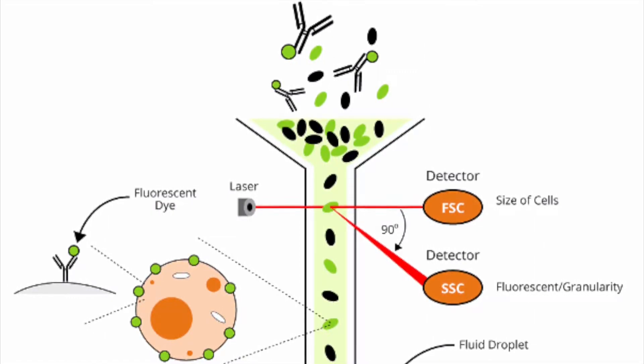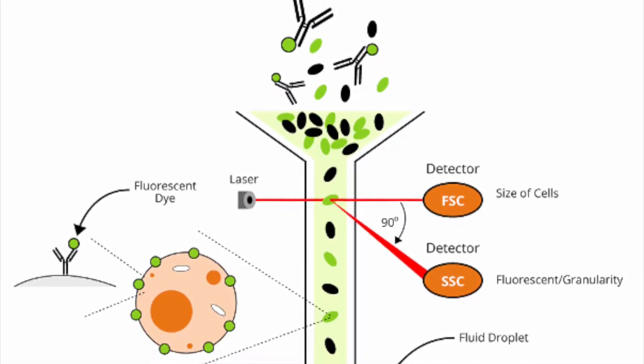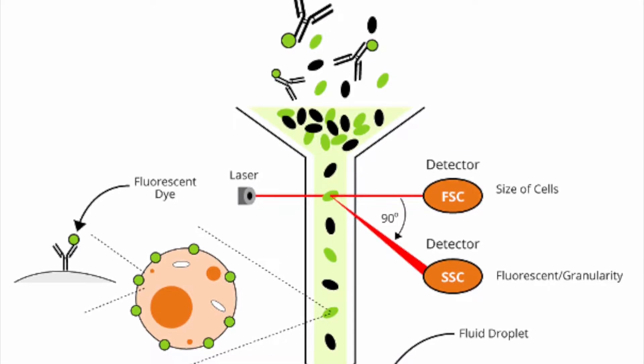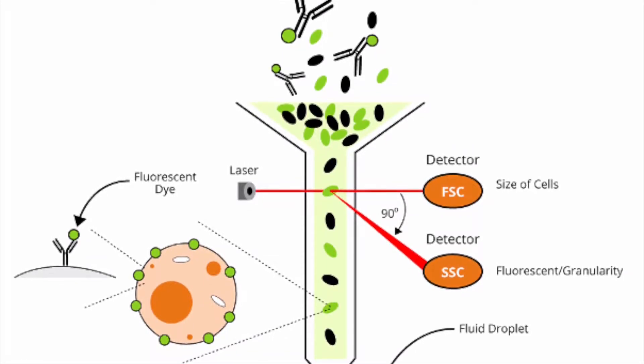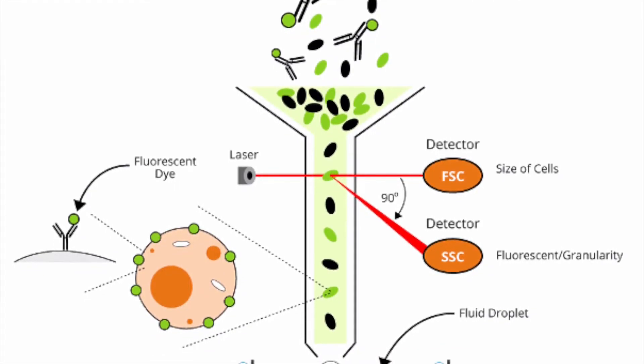Flow cytometers are able to analyze many thousands of particles or cells per second. At the same time, there's a flow of cells in a liquid stream that carries the cells so they can pass single-file through the light beam for sensing.